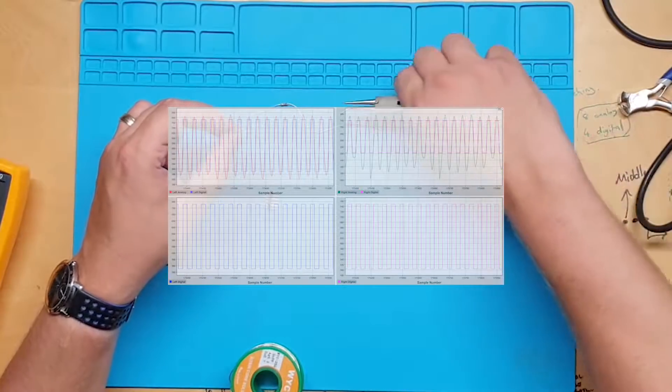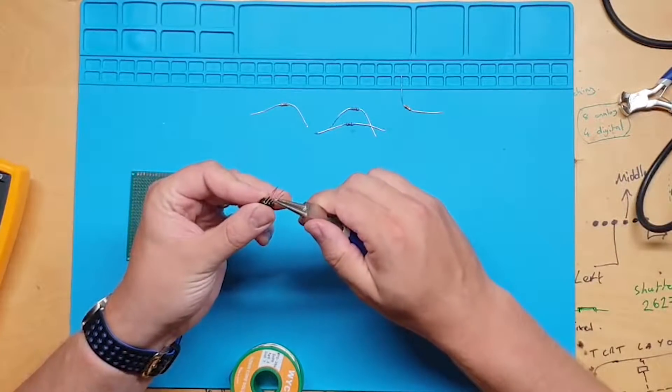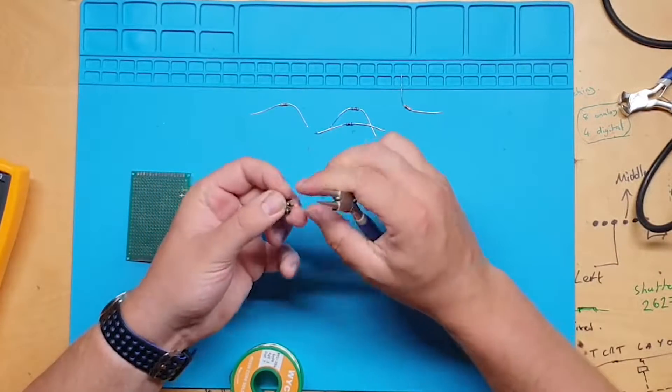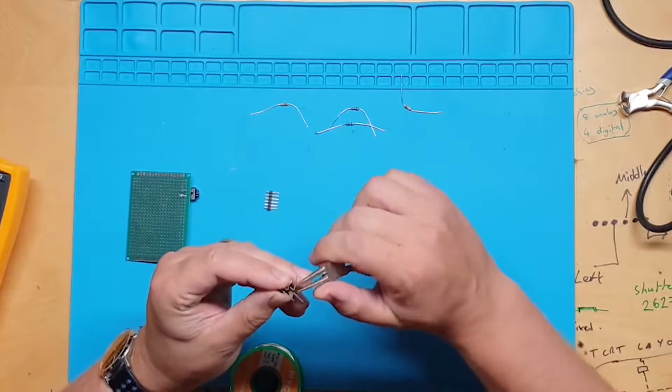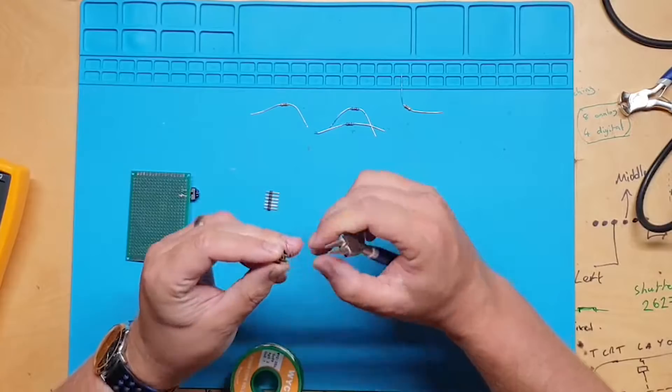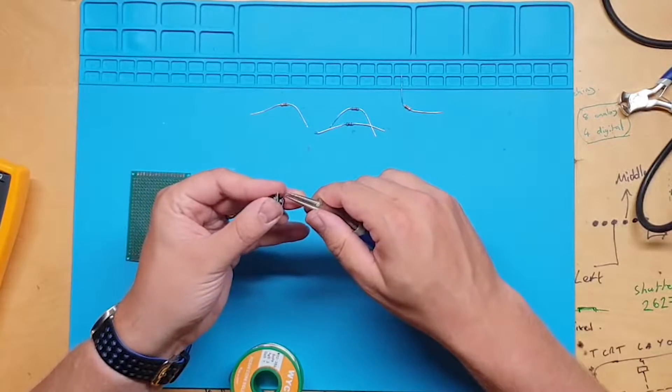Once we have made the odometry module we will make the battery board on the same perf board. We're making the odometry module first as it is trickier than the battery module and we must ensure that the odometry module works before constructing the battery board.